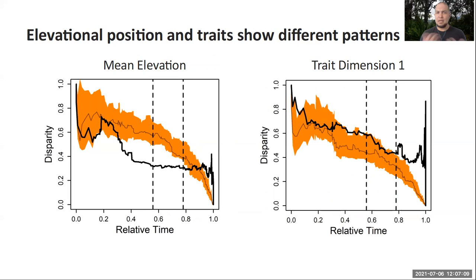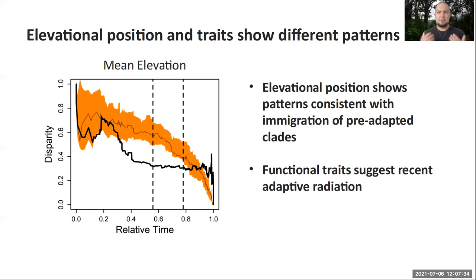However, when we contrast this with what we see for trait dimensions — here represented by trait dimension one — it's very different. For trait dimensions, most of the variation happens within clades, and that is consistent across the evolution of the clade, suggesting the opposite pattern. So in terms of elevation, the phylogenetic patterns suggest that clades have constrained distributions and potentially reflect the colonization of pre-adapted clades. But when we look at functional traits, the results suggest that a lot of the diversification leading to different functional traits happened after the uplift of the Andes and within clades.